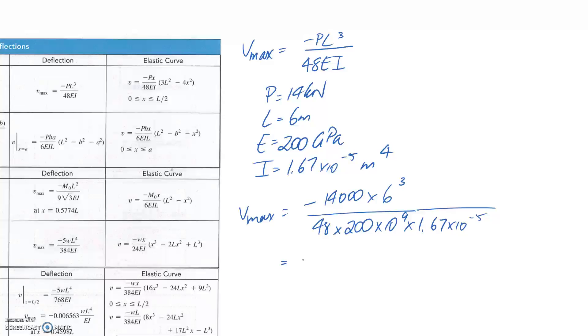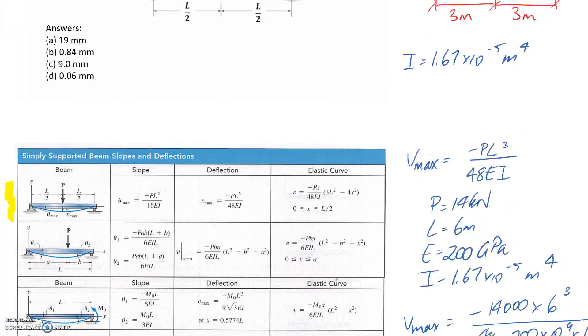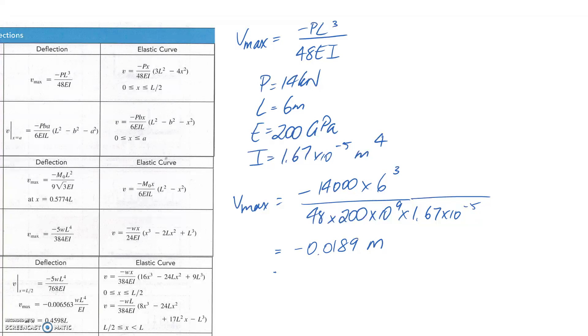So if you put all this into a calculator, it comes out as negative 0.0189. And since everything was in base units, I'm going to get out the base unit for deflection, which is metres. And if we scroll back to our answers, these are all in millimetres. So if we wanted to convert it, we need to multiply this by 1,000.